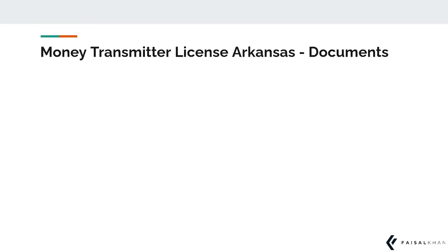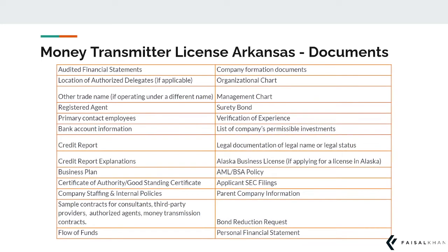In order to obtain this license, you will first need to submit an application with the NMLS along with the following documents such as audited financial statements, business plan, surety bonds, etc. You can pause this video to read through the entire list of required documents presented here.